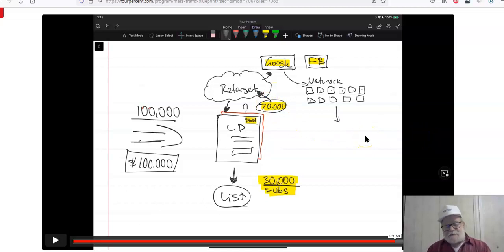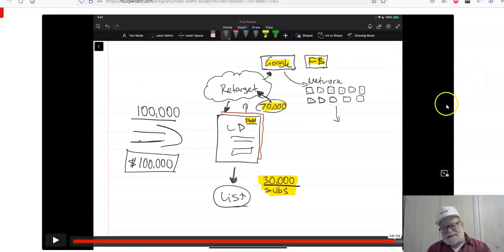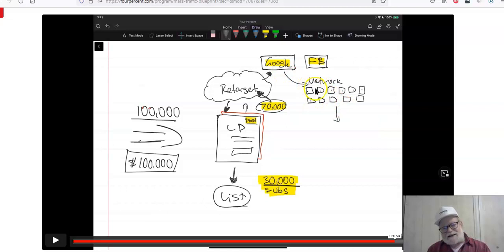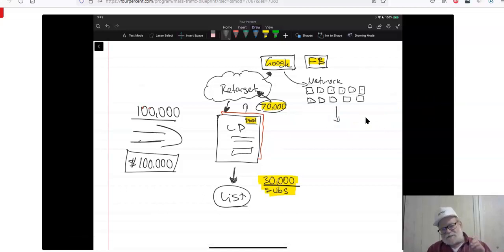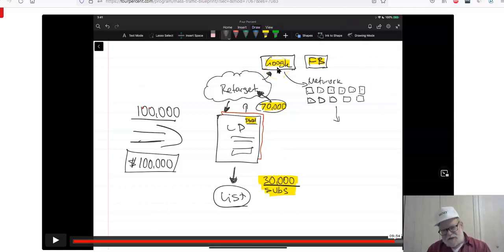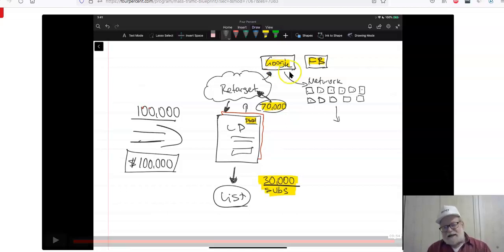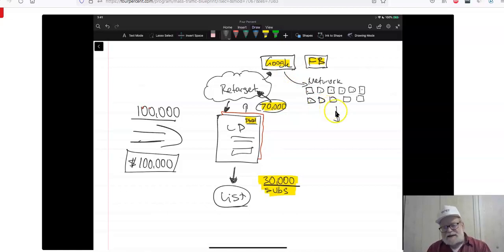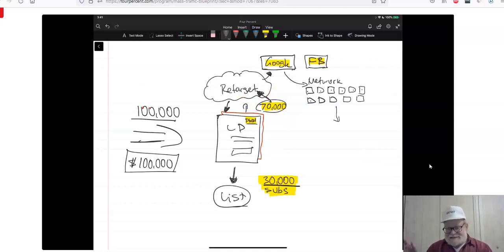Well, what you do then is at some point in time, could be right away, it could be later on, but at some point in time, you go to Google. And Google has something they call a display network. This is a network of who knows how many websites, could be millions of websites, where you can place display ads. And Google will place them for you. You can design the display ad, have somebody else design it. You can even use a banner from the creator of the product you're marketing as an affiliate. And you ask Google to take those banners and place them in front of the people on this retargeting list.